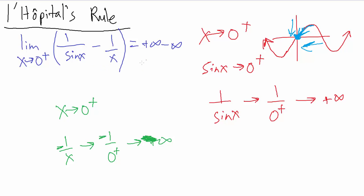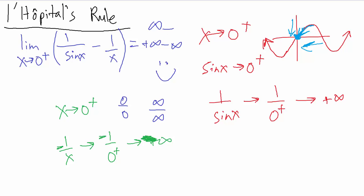So what we have is really infinity minus infinity, which makes us sad because that's an indeterminate form. But it also makes us happy because since we have an indeterminate form, that tells us we can use L'Hôpital's rule. The downside is we can't directly use L'Hôpital's rule, because in order to do so we have to have zero over zero or infinity over infinity from direct substitution, which we didn't get — we got infinity minus infinity. Still, this tells us we can use L'Hôpital's rule if we first do some algebraic manipulations.